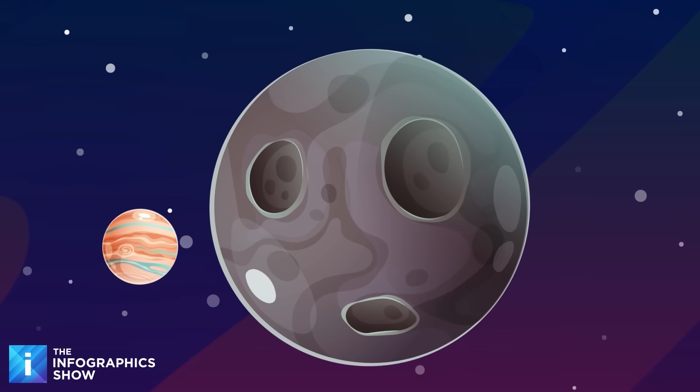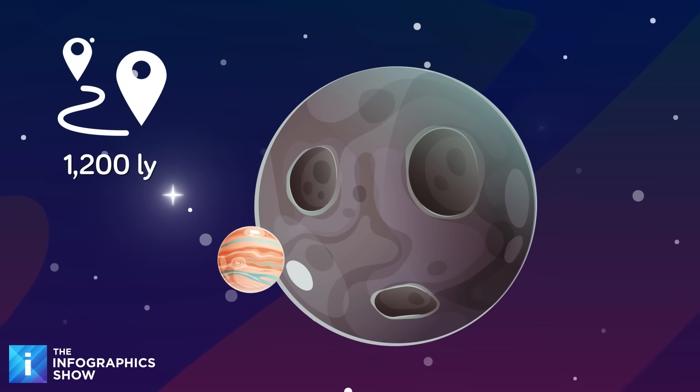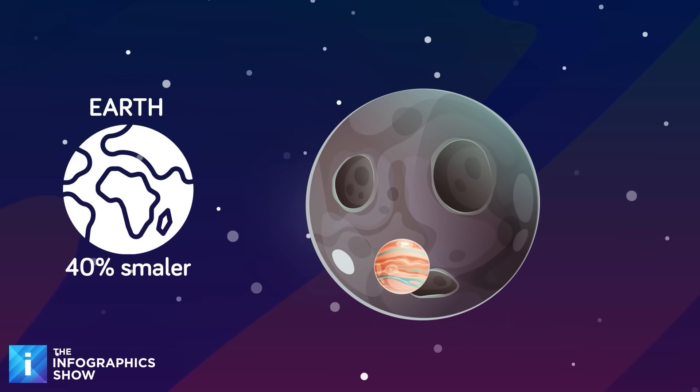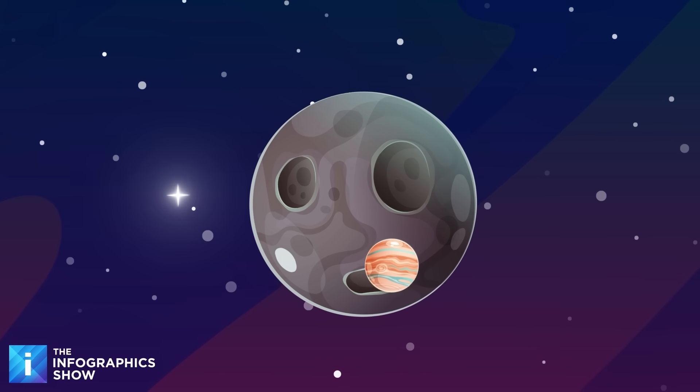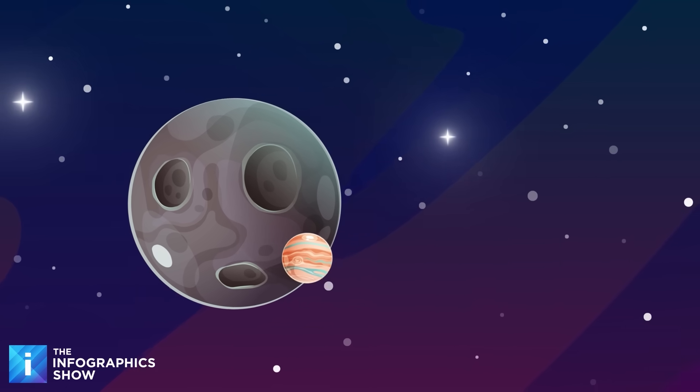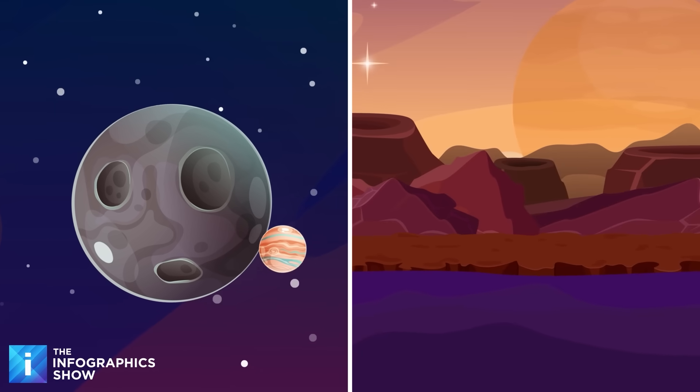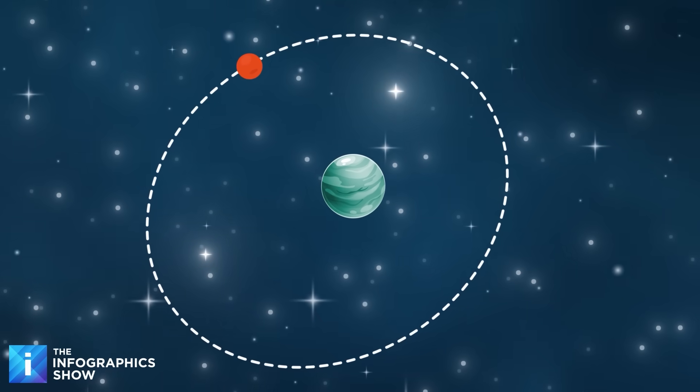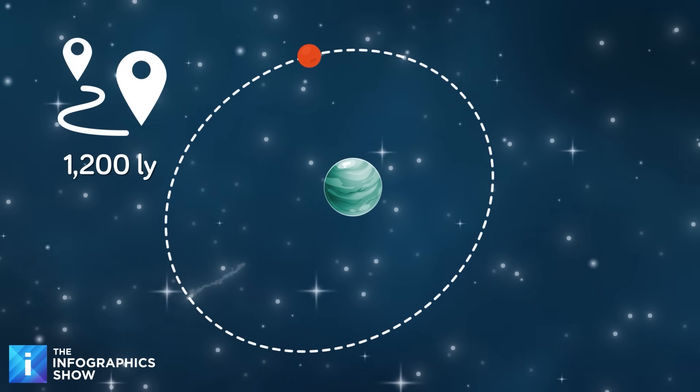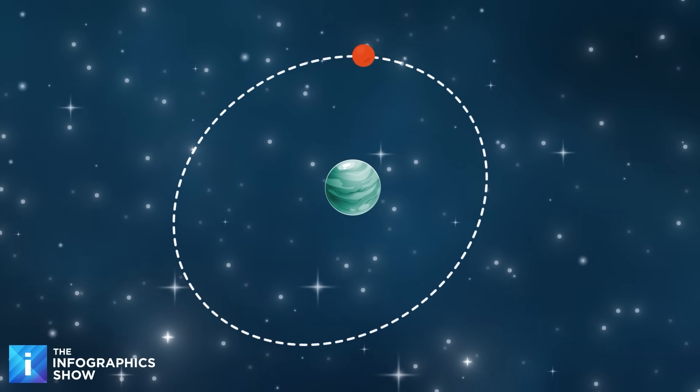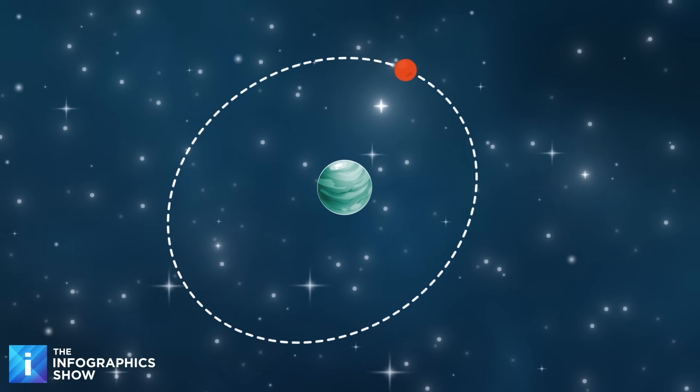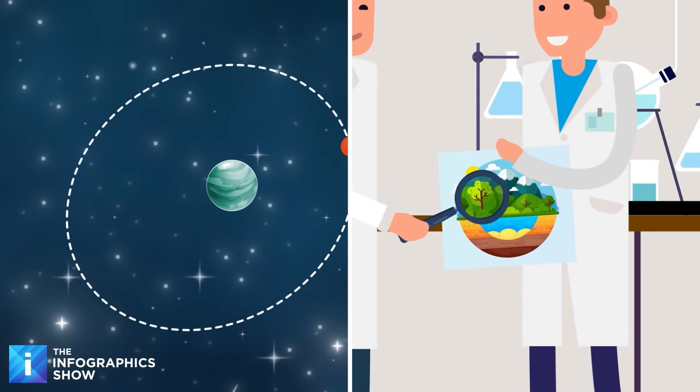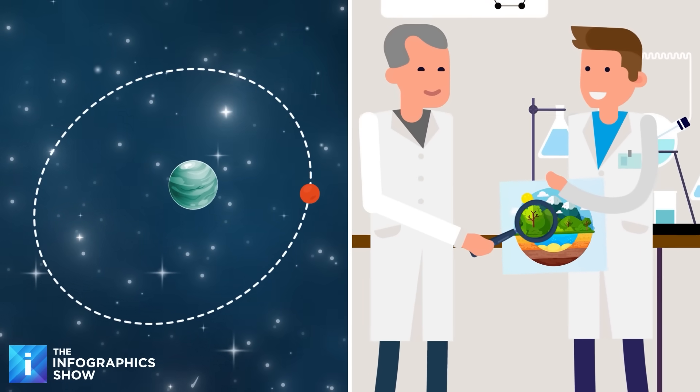Meanwhile, Kepler 62f is located roughly 1200 light-years away. It is about 40% larger than Earth and orbits a cooler star. Its orbit within the habitable zone suggests the potential for liquid water and its size hints at the possibility of being a rocky planet with oceans. And Kepler 442b is situated about 1200 light-years away. This exoplanet is about 33% larger than Earth and orbits a K-type star or an orange dwarf. Studies suggest that it might receive enough light to support a large biosphere.